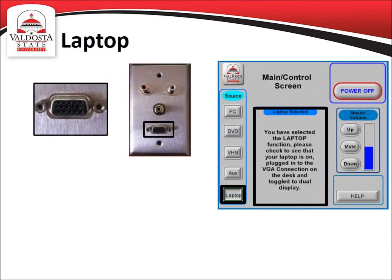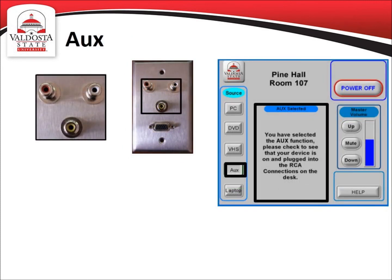The laptop button switches the source to display the screen of any devices connected via VGA cable. This feature is only available in rooms with the VGA port. The aux button switches the source to auxiliary, which switches to any device connected via RCA cable. This feature is only available in rooms with RCA ports. Please note that classrooms do not typically have spare VGA, RCA, or adapter cables, so you should bring your own if you plan on using the laptop or auxiliary feature. Also, instructors should primarily rely on the PC source, and reserve using laptop or auxiliary for demonstrations with software and applications that are not available on the classroom computer.